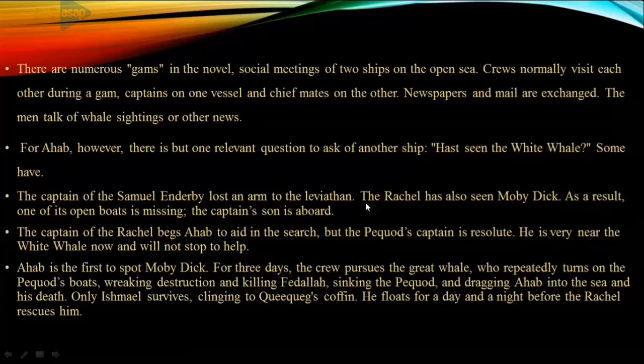There are numerous gams in the novel. Gams means the social meetings of two ships on the sea. The Pequod has started a three-year voyage, so naturally meeting other ships is an occasion of joy. It is through these gams that the crew learns what is happening on land, and they exchange mails and newspapers on these occasions. Captains visit one vessel and chief mates the other. Ahab, however, is concerned only about one question at every gam: has anyone seen the white whale?